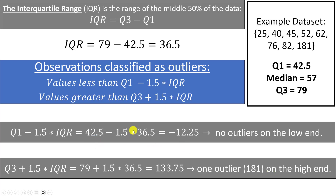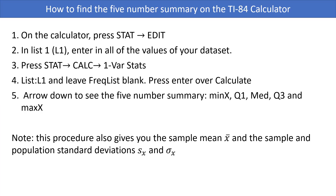Make sure you respect order of operations here — do the multiplication first before the subtraction or addition. If you do 42.5 minus 1.5, get an answer, and then multiply by 36.5, you'll get the wrong answer. Your calculator will follow order of operations, so you can type the entire expression in at once and get the correct answer.